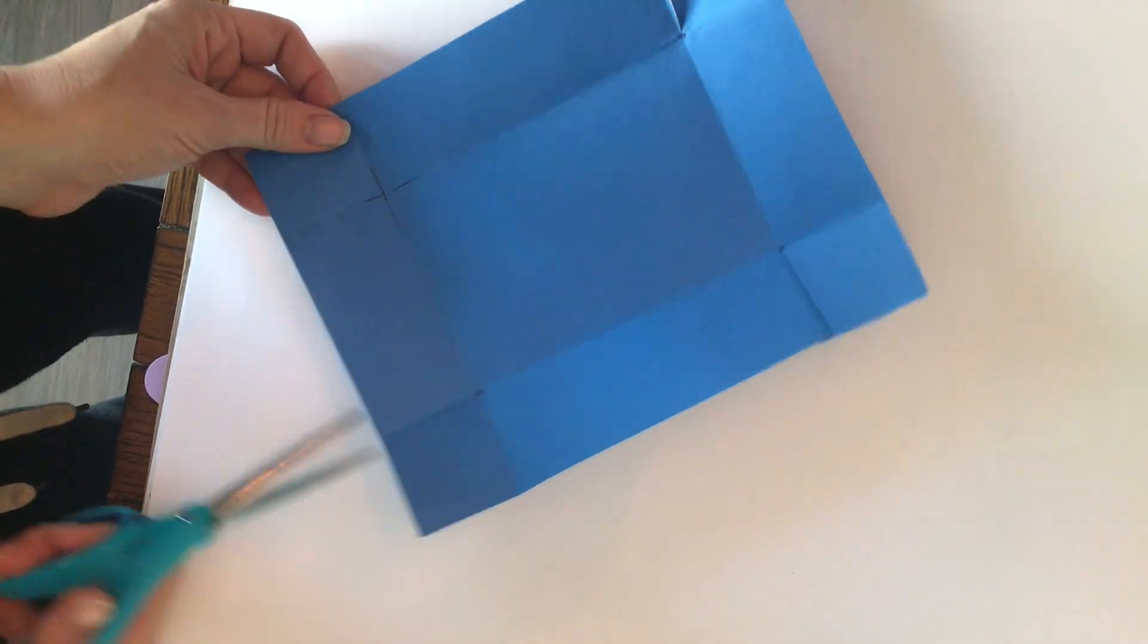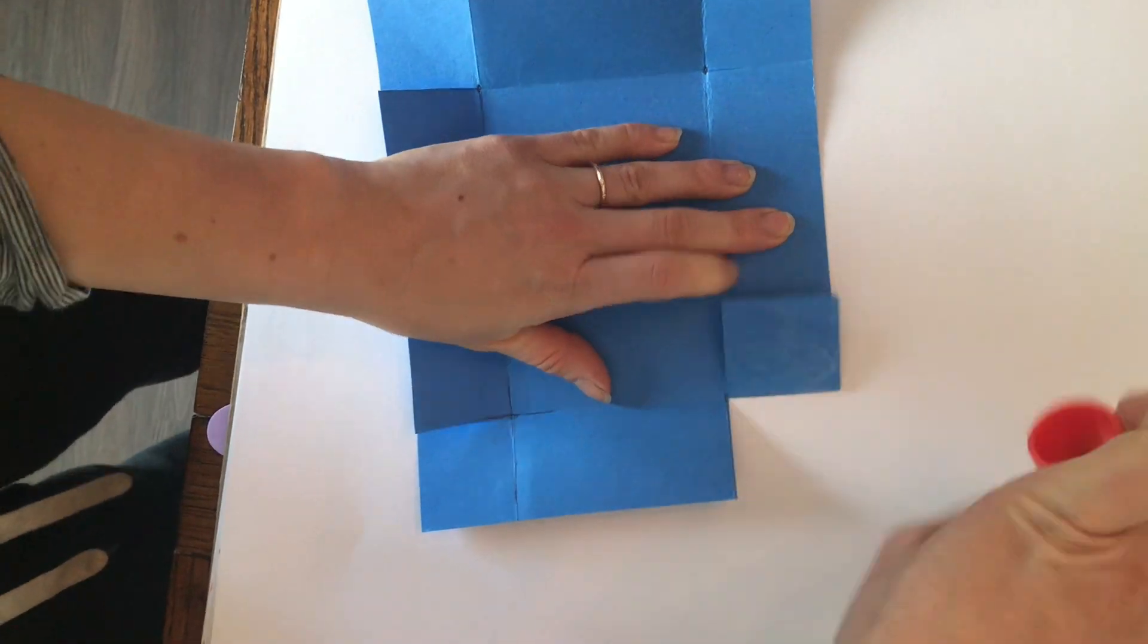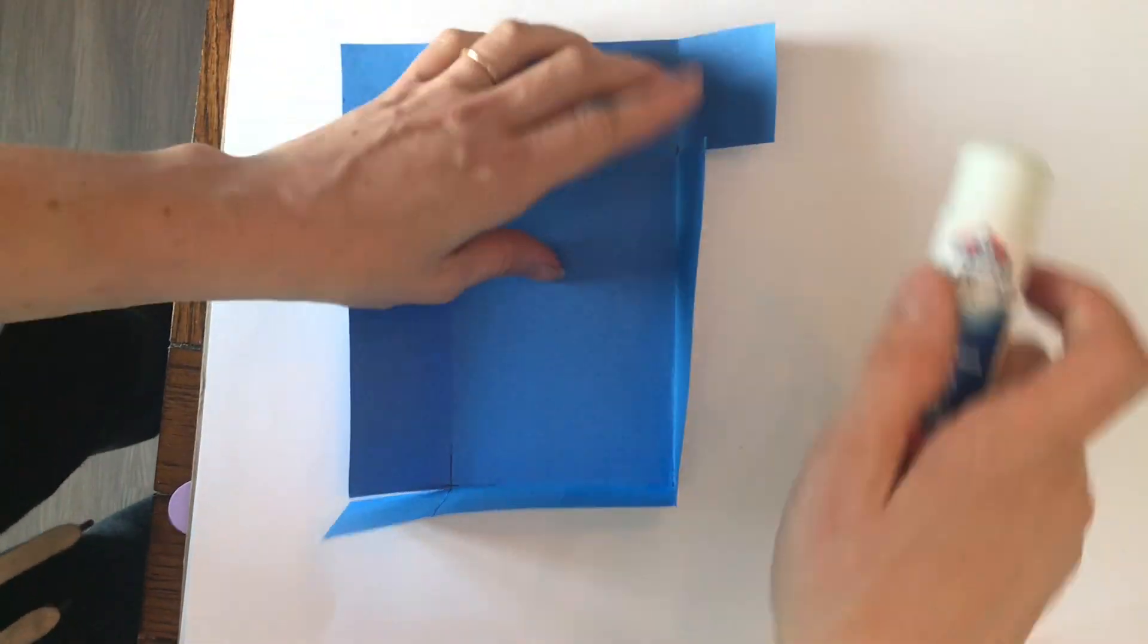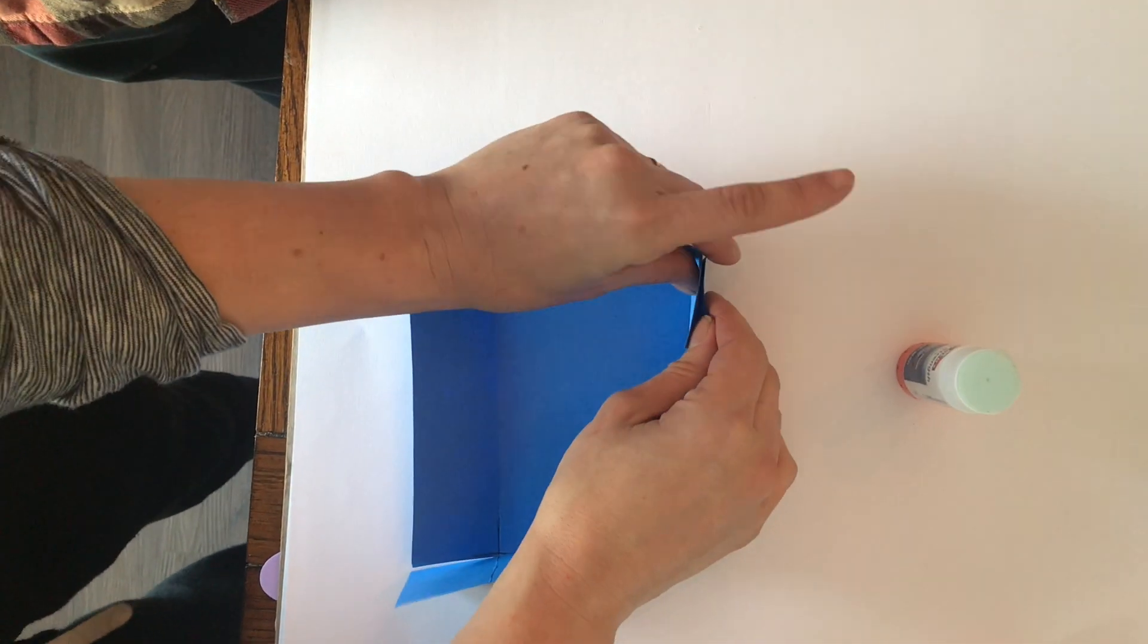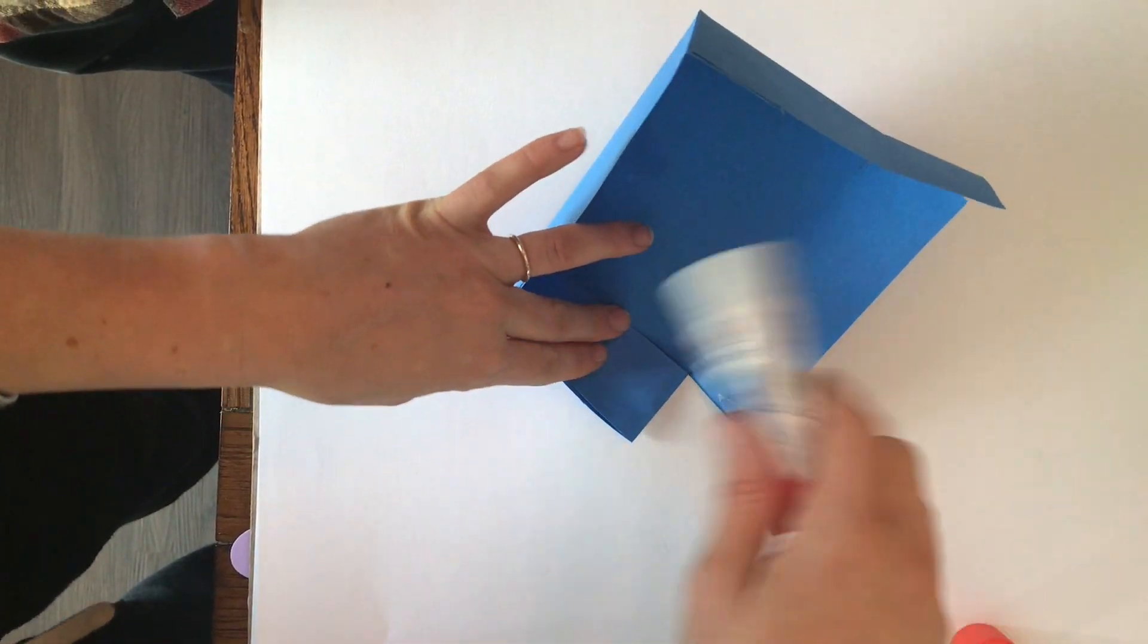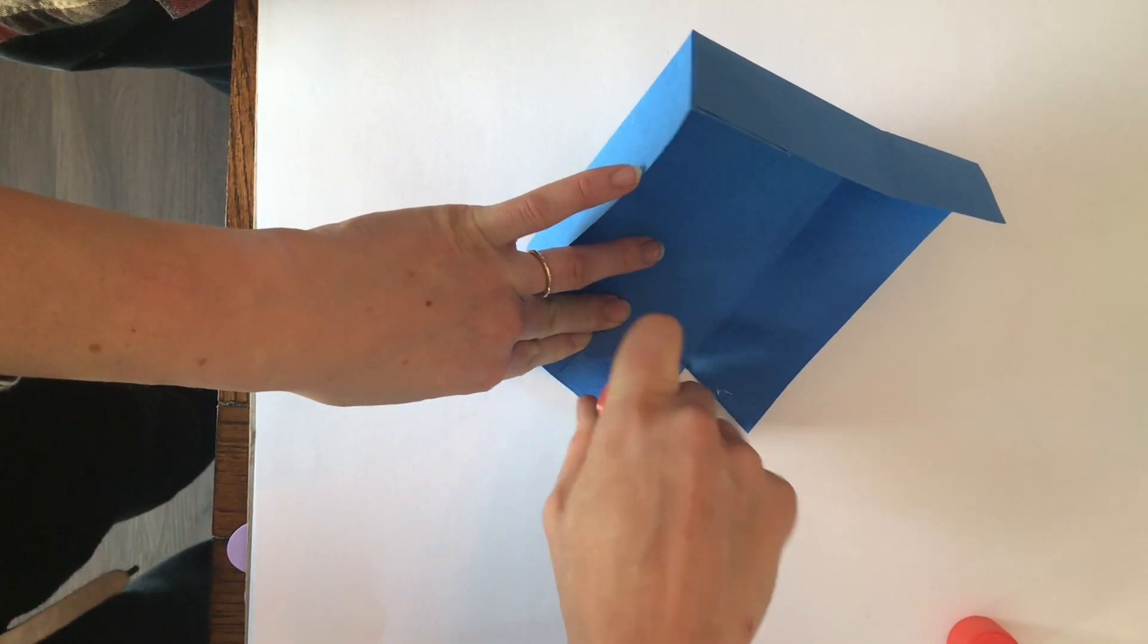Unfold it and what you're going to do is make one little snip at the intersection of each fold. The intersection is where all the folds meet so I marked them with a pen so you can see. I added glue to the squares on the corners and when I meet the sides up it creates the box.